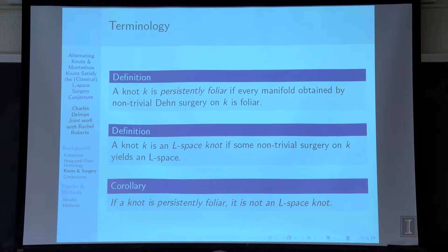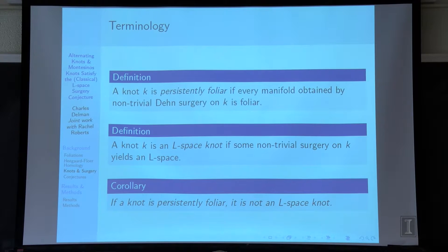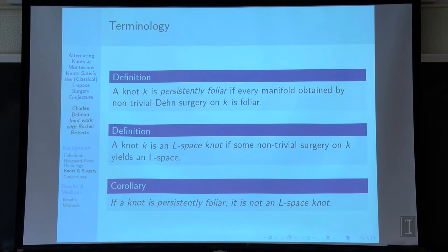A knot K is persistently foliar if every manifold obtained by a non-trivial Dehn surgery on that knot is foliar. So we're interested in knots where any surgery gives a manifold admitting a taut co-orientable foliation. It may seem surprising that there are actually lots of those. A knot is an L-space knot if some non-trivial surgery on K yields an L-space. It's an immediate corollary that if a knot is persistently foliar, it is not an L-space knot, because a foliar manifold can't be an L-space.